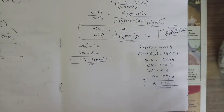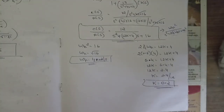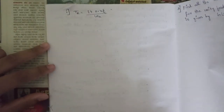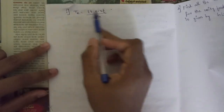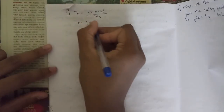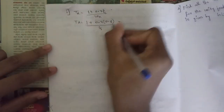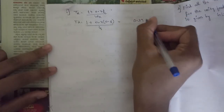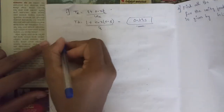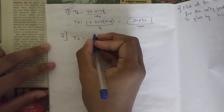Now find all time domain specifications: td, tr, tp, mp, and ts. For delay time td, the formula is (1 + 0.7ζ) / ωn = (1 + 0.7 × 0.8) / 4. Solving gives td = 0.39 seconds.